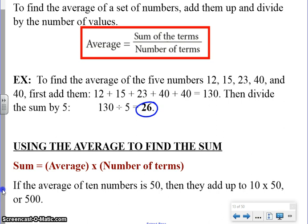But the more challenging type: remember that using the average to find a sum, we can do that as well, because the sum is always going to end up being the average times the number of terms. What I mean by that is that when we took 12 plus 15 plus 23 plus 40 plus 40, we got 130. We then figured that the average is 26. We could use that understanding to go backwards. If the average is 26 and there were five terms, multiplying those could get me back to my sum of 130. In certain cases, that's going to be valuable information. If the average of 10 numbers is 50, then they must add up to 10 times 50 or 500.